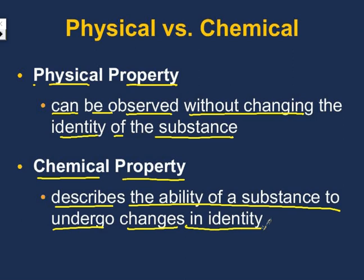So when it goes from one thing to another, let's look at some examples and figure out if it is or isn't changing the identity. If it's not changing the identity of the substance, it's going to be a physical property. And if it is changing what the substance actually is, we're going to be talking about chemical properties.